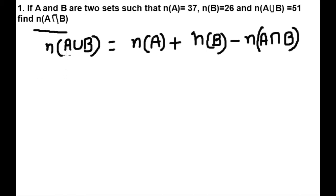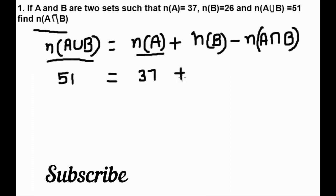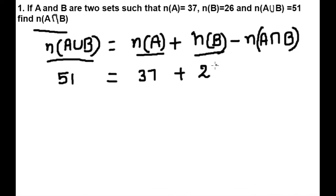Now we have the value of n(A union B) is equal to 51, n(A) is 37, n(B) is 26, and we have to find n(A intersection B).